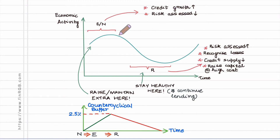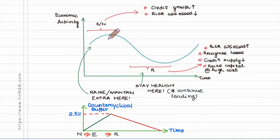During this period, because risk is under-assessed, banks build up insufficient levels of reserves — which are meant to absorb expected losses — and also insufficient levels of capital, which is required to absorb unexpected losses. So reserves and capital are both under-provisioned during this period.